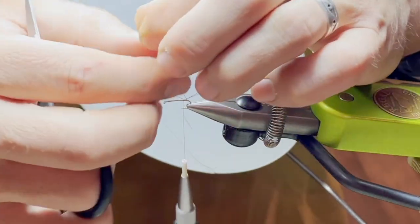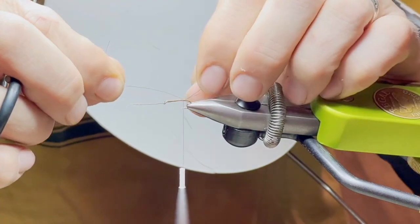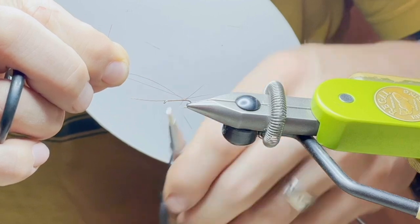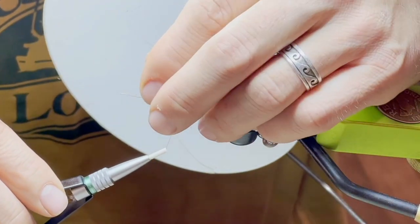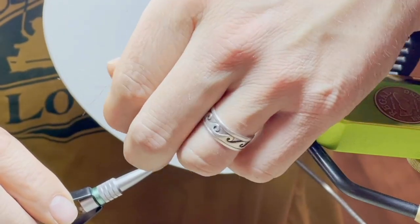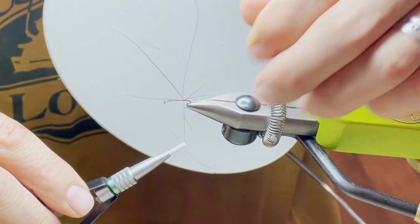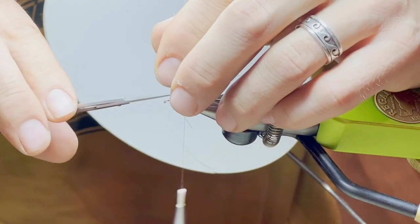Basically what I did is I left a tag of thread, tied on two moose body hairs, and pulled the tag through to split them. Now I'm going to go back, clip these, get this thread back in the back with a wrap, clip these like I should have already done.